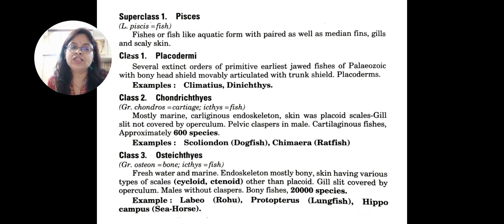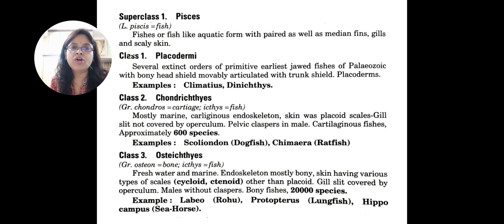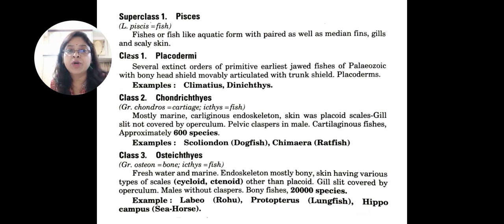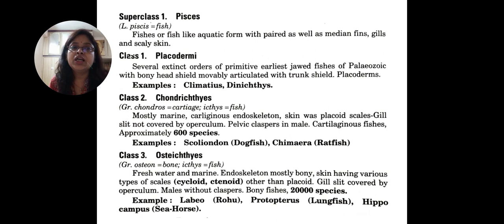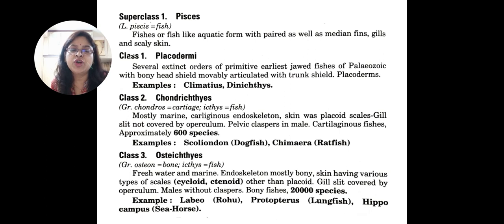The second class is Chondrichthyes. Chondro means cartilage and ichthys means fishes, so these are cartilaginous fishes. Chondrichthyes are also called Elasmobranchs. They are mostly marine and their endoskeleton is cartilaginous. Skin has placoid scales and gill slits are not covered by operculum — this is a very important point. Pelvic fins have claspers in males for transfer of sperm. Approximately 600 living species are there in Chondrichthyes, for example Scoliodon (dogfish) and Chimaera (rat fish or ghost fish).